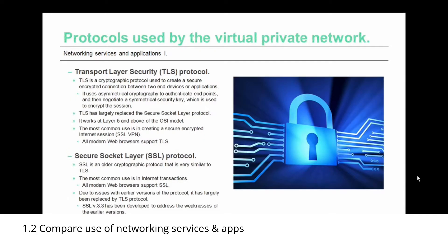Transport Layer Security is another common VPN protocol. TLS is a cryptographic protocol used to create a secure encrypted connection between two end devices or applications. It uses asymmetrical cryptography to authenticate endpoints and then negotiates a symmetrical security key, which is used to encrypt the session. TLS has largely replaced its cousin, Secure Socket Layer protocol, and TLS works at layer five and above of the OSI model. Its most common usage is in creating a secure encrypted internet session, or SSL VPN, and all modern web browsers support TLS.